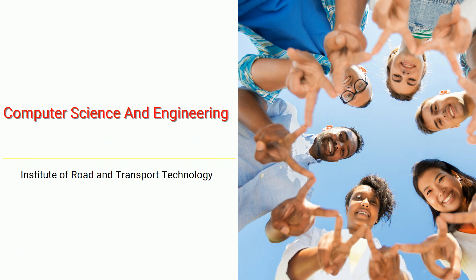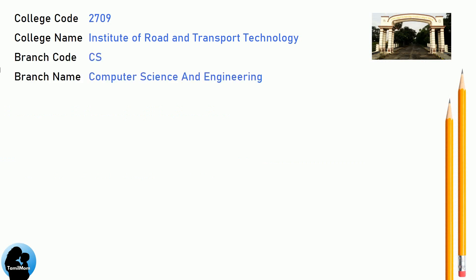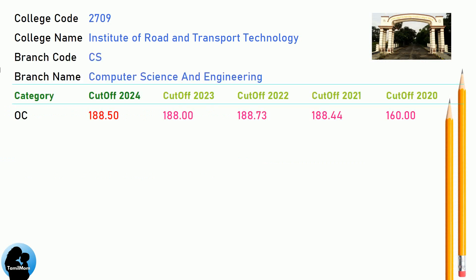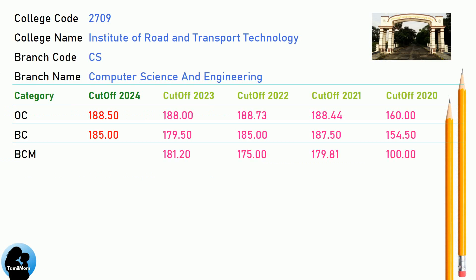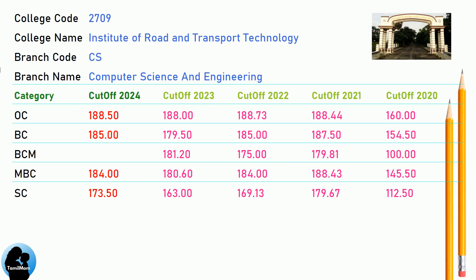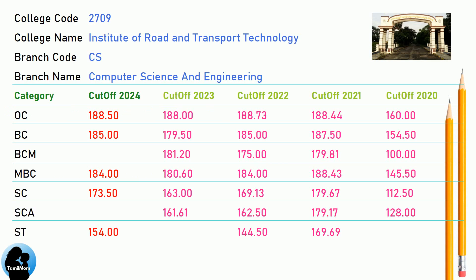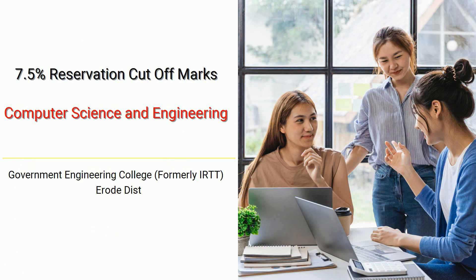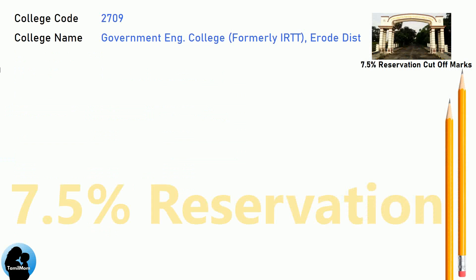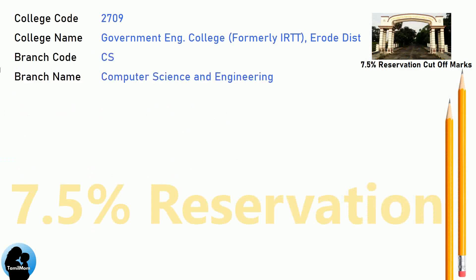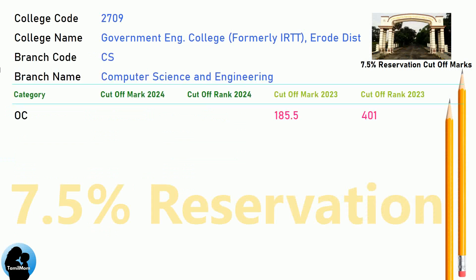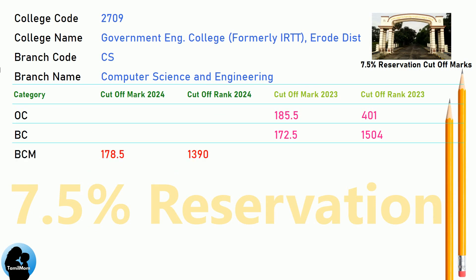DNEA 7.5 Reservation Cut-Off for Government Engineering College, formerly IRTT, Erode District. DNEA 10.5 Reservation Cut-Off for Government Engineering College, formerly IRTT, Erode District in Computer Science and Engineering.